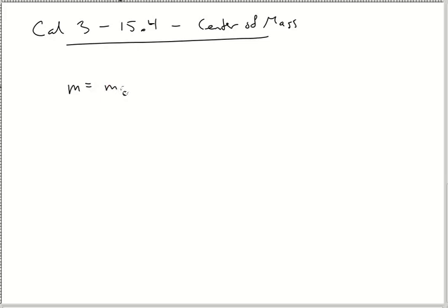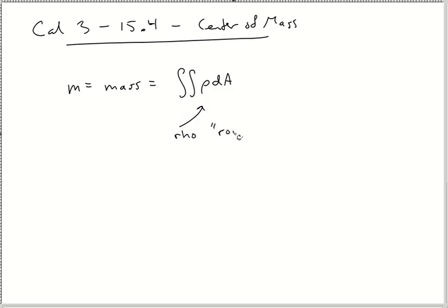Mass, little m, is equal to the double integral of ρ dA. That's rho — the R letter in Greek. The double integral of ρ dA gives you your density. Sometimes they'll give you variable density; sometimes that's constant.